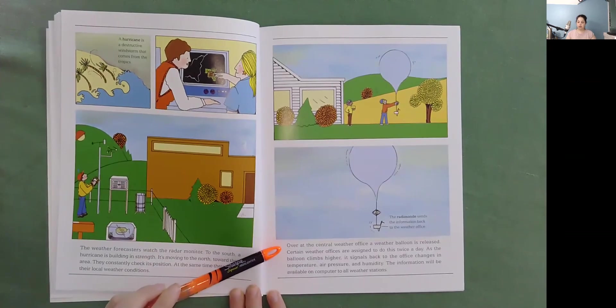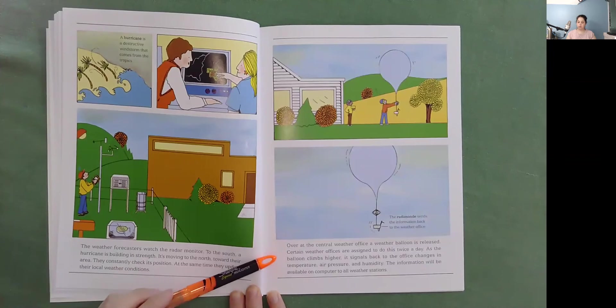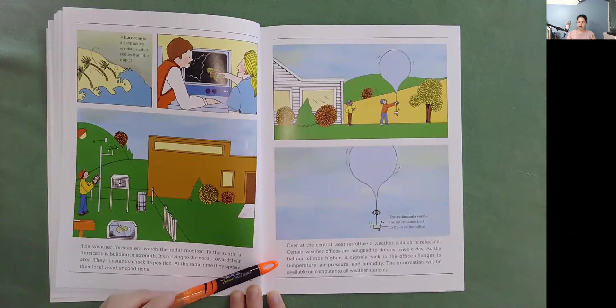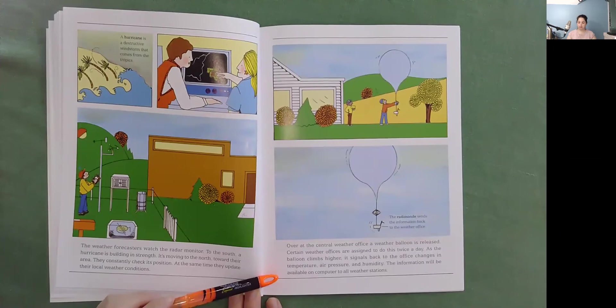Over at the central weather office, a weather balloon is released. Certain weather offices are assigned to do this twice a day. As the balloon climbs higher, it signals back to the office changes in temperature, air pressure, and humidity. The information will be available on computer to all weather stations.